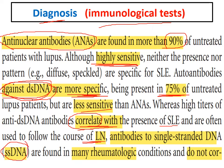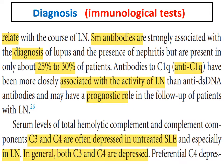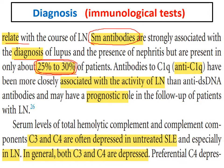Anti-single-stranded DNA is present in many rheumatological diseases and does not correlate with the course of lupus nephritis. Anti-Sm antibody is highly specific for lupus but has very low sensitivity — present in only 25–30 percent of cases. So: ANA is highly sensitive but not specific; anti-dsDNA and anti-Sm are more specific but less sensitive.